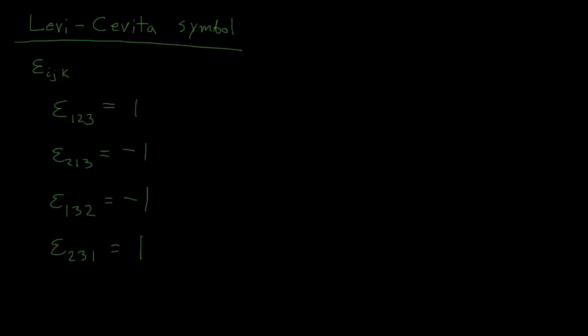The other case is when there's a repeated index — something like epsilon 1, 1, 2. Since the index 1 appears twice, this symbol equals 0. Similarly, epsilon 2, 2, 3 equals 0. Anytime there's a repeated index, the Levi-Civita symbol equals 0.